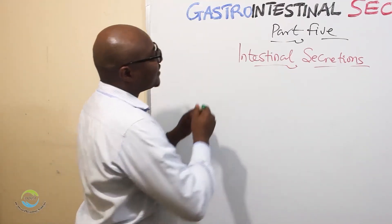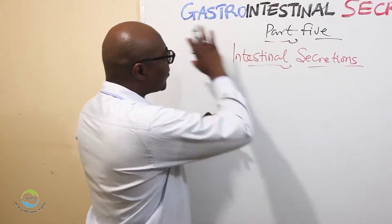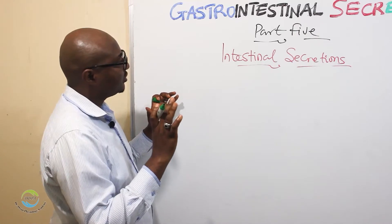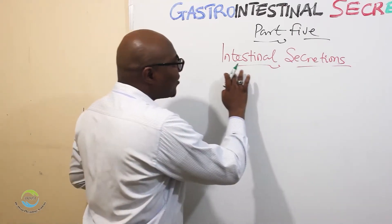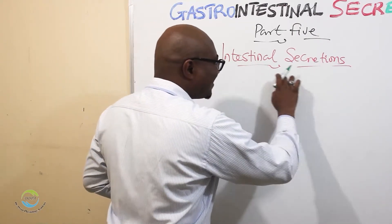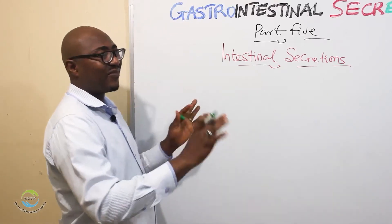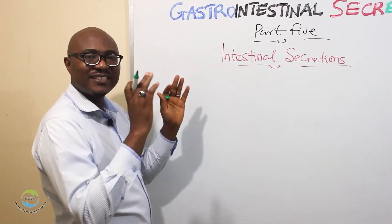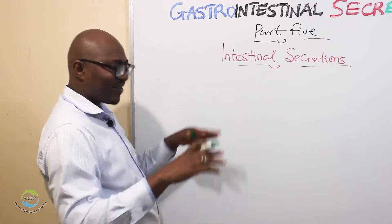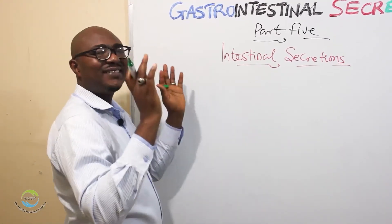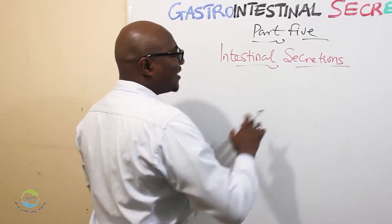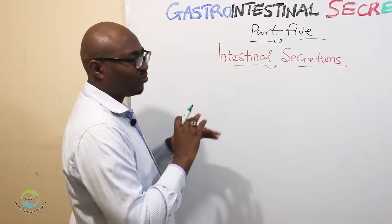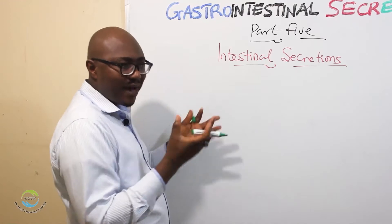This is part five of gastrointestinal secretion. We're now focusing on intestinal secretion. We've dealt with salivary secretion, gastric secretion, pancreatic secretion, and biliary secretion. Now intestinal — and this is very, very easy. There's nothing complex to think about here.